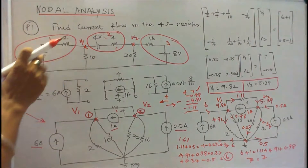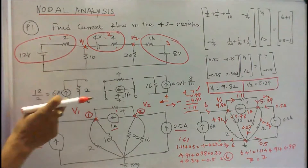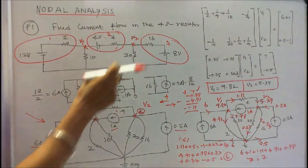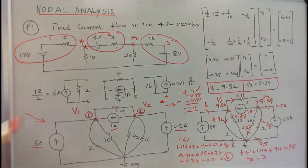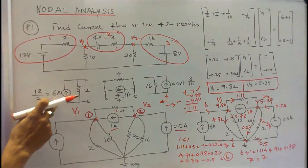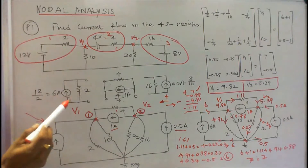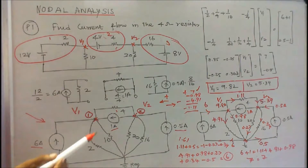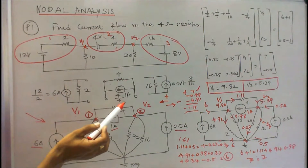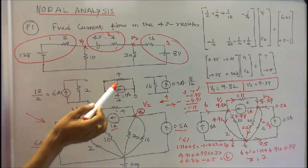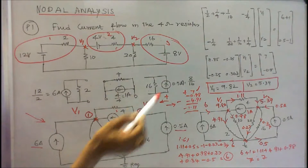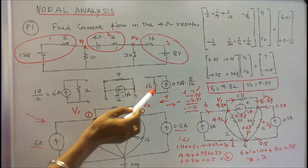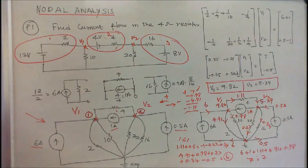Now identify these three combinations: 12 volt and 2 ohm; 4 volt and 4 ohm; 16 ohm and 8 volt. I convert these three into equivalent current sources. First: 12 by 2 equals 6 amps, with the 2 ohm resistor connected in parallel. Similarly, 4 by 4 equals 1 amp, with the 4 ohm resistor in parallel. And 8 by 16 equals 0.5 amps, with the 16 ohm resistor in parallel.